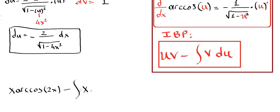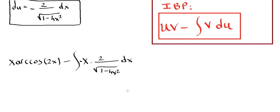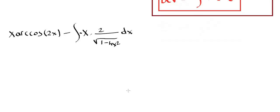We can pull the negative sign out, giving us plus the integral of 2 over the square root of 1 minus 4x squared dx. Now we need to take care of this integral. In this integral we're going to do another substitution. We have 1 minus 4x squared here, so let's call it w.